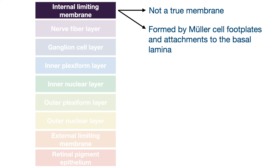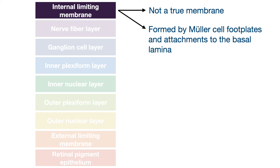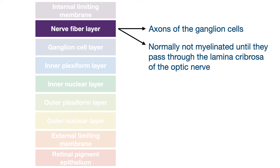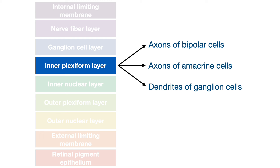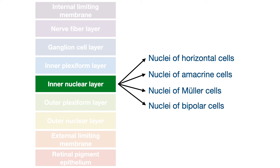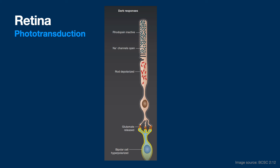The ILM is not a true membrane — it's foot plates of Mueller cells attached to the basal lamina. The nerve fiber layer contains axons of ganglion cells, typically not myelinated. The GCL is a nuclear layer with cell bodies of ganglion cells. The IPL has axonal and dendritic connections between bipolar, amacrine, horizontal, and ganglion cells. It's important to be able to list the nine or ten layers of the retina and know which ones are true membranes and which are not.